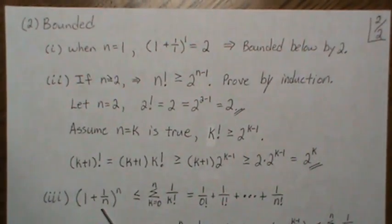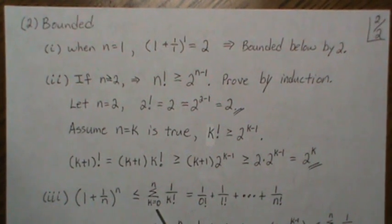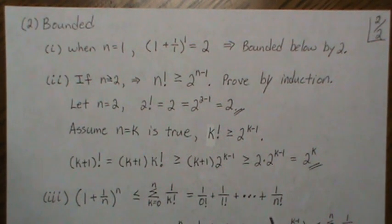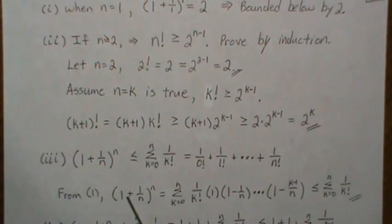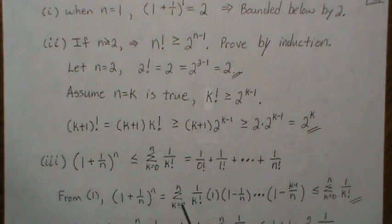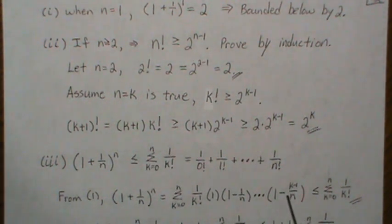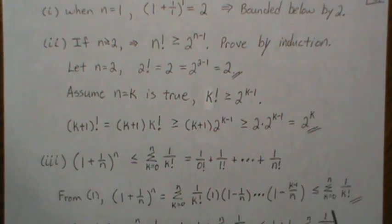Next we want to show that the nth term of our sequence is greater than a certain sum. From our earlier binomial expansion of a(n), we got a sum of terms where each factor is positive but less than 1. If we drop those factors — replacing each by 1 — the sum only gets larger, giving us a sum of 1/k! terms. That establishes the lower bound inequality.